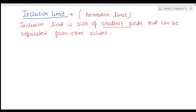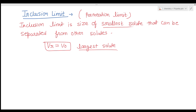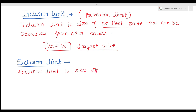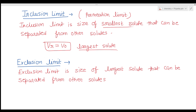For large solutes — those too large to enter the pores — they will simultaneously elute with a retention volume given by: Vr = V₀. There is one more limit called the exclusion limit. The exclusion limit is the size of the largest solute that can be separated from other solutes — the largest solute particles that cannot enter the pores.